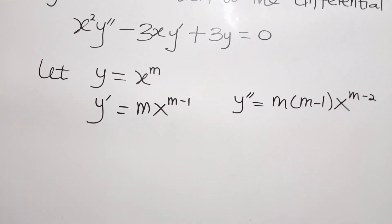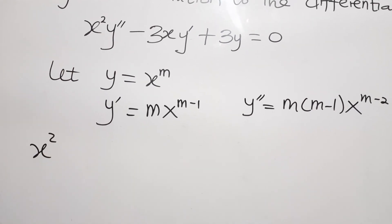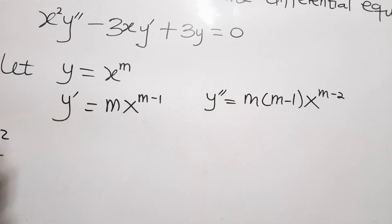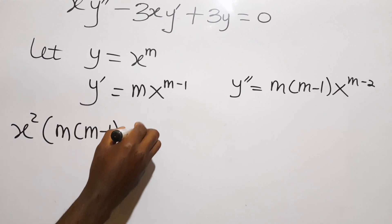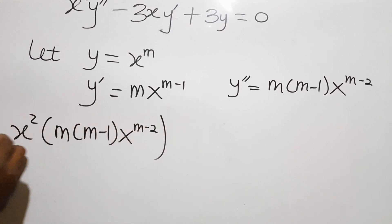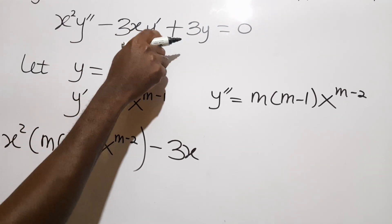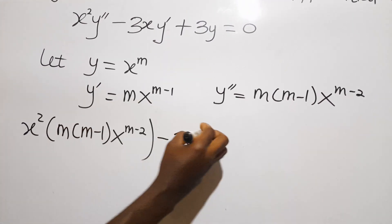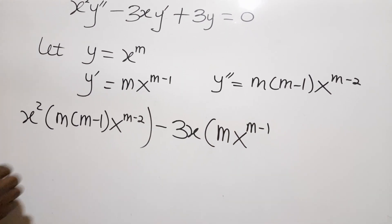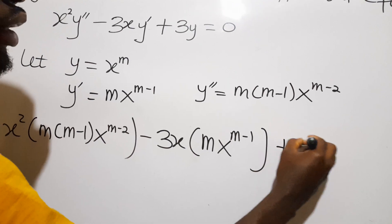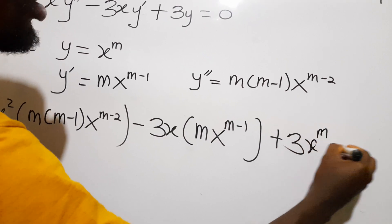Substituting into the differential equation: x squared times m(m−1)·x^(m−2), minus 3x times m·x^(m−1), plus 3·x^m equals 0.